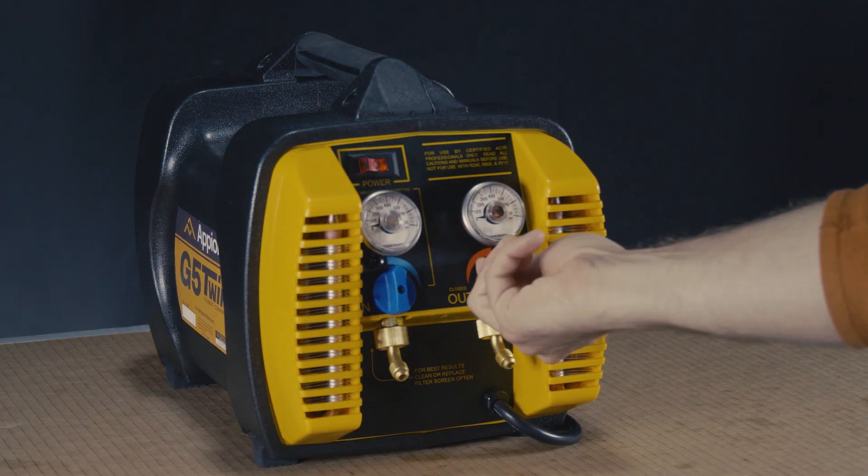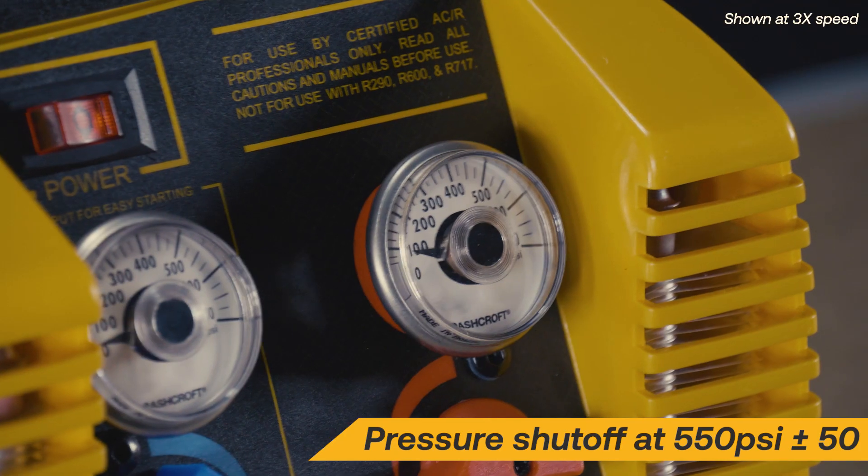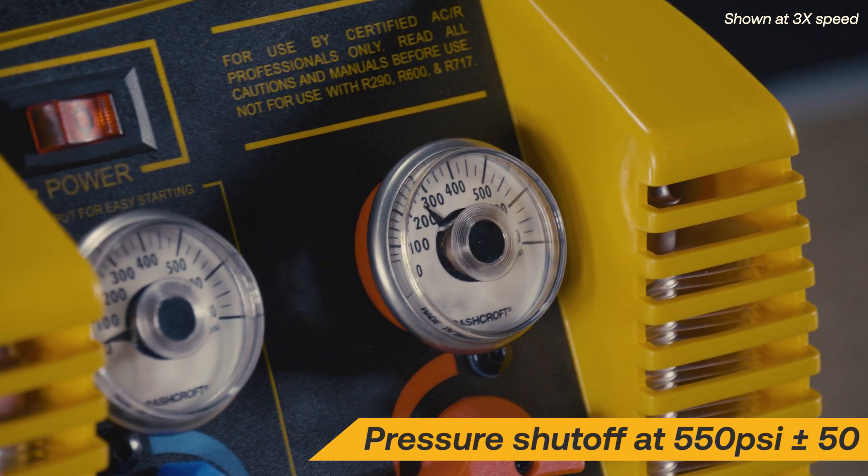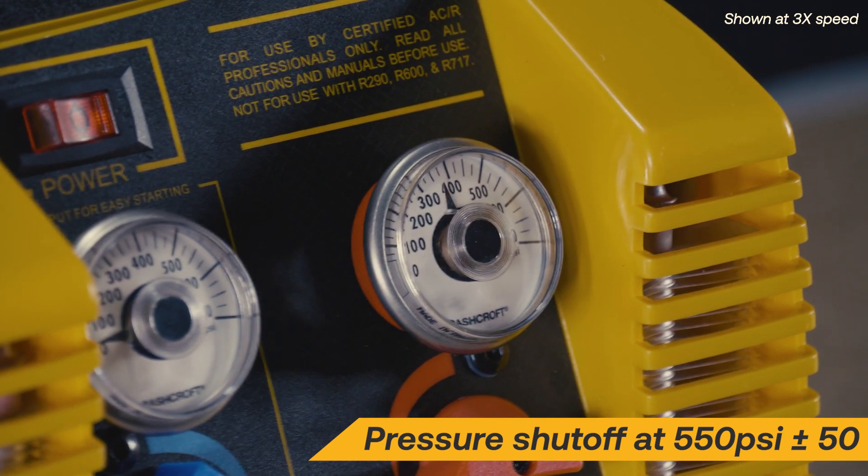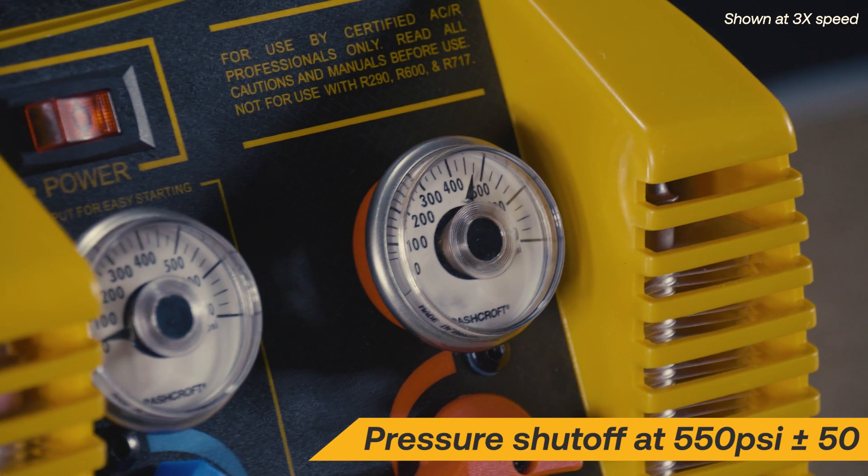First, close the output valve on the faceplate. The machine should build internal pressure and shut off at approximately 550 psi in under 60 seconds.